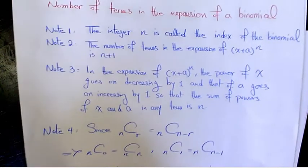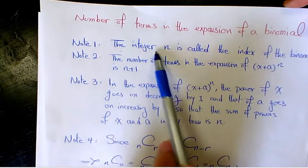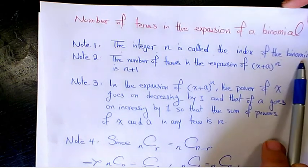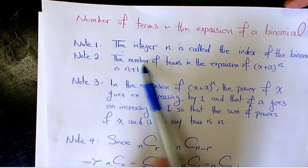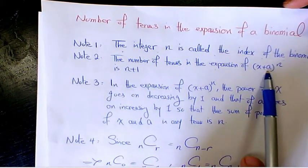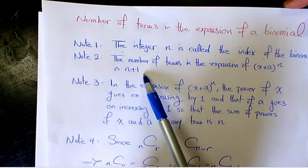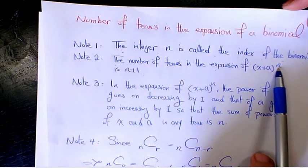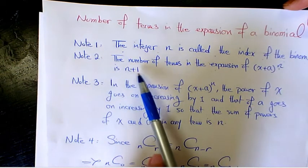Here, as we had it before in another video, we said the integer n is called the index of the binomial, and the number of terms in the expansion of (x+a)^n is n+1. So n is the index of the binomial and we're going to end up having n+1 terms.